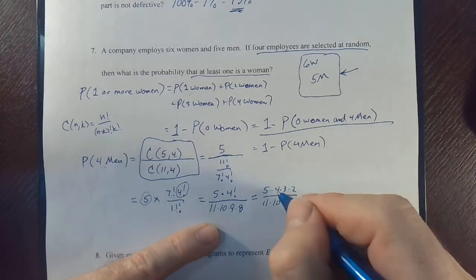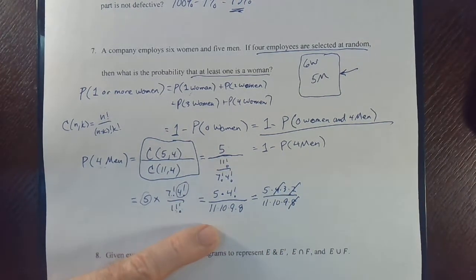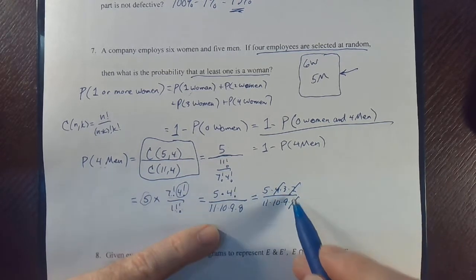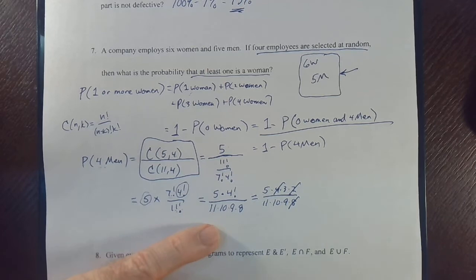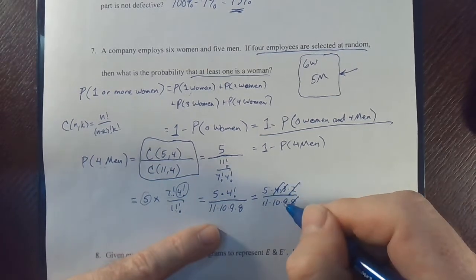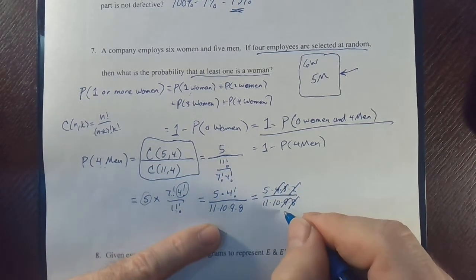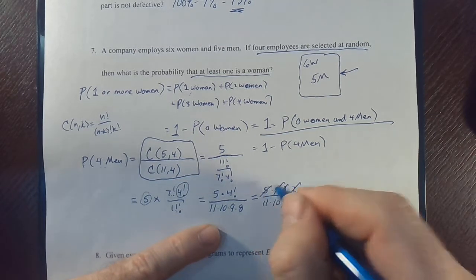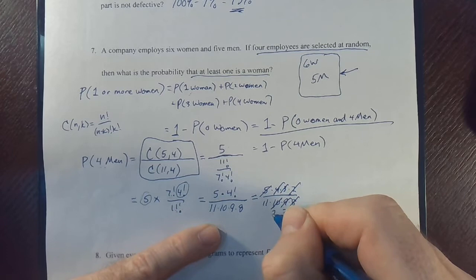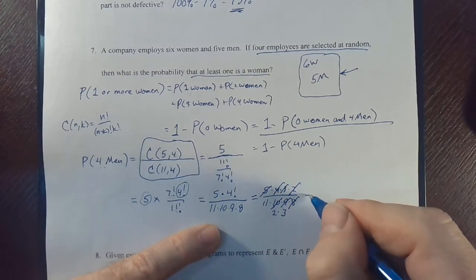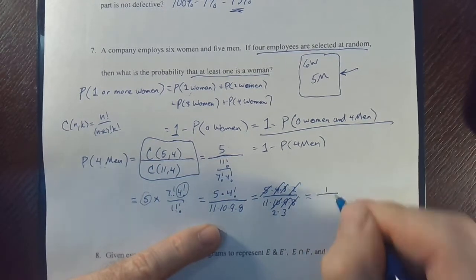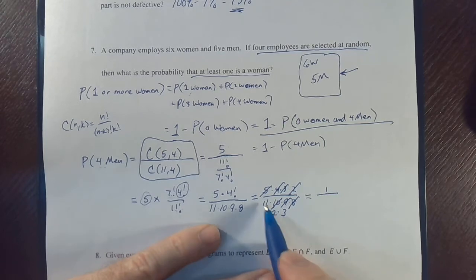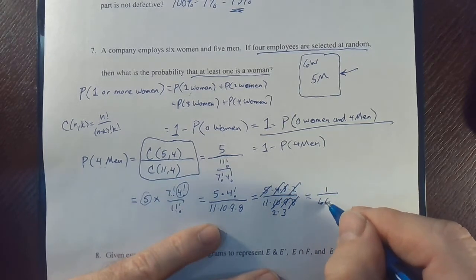I'm going to take 4 times 2 and cancel it with the 8 in the denominator. Then 3 over 9 leaves a 3 in the denominator, and 5 over 10 leaves a 2 in the denominator. So we get 1 on top and 11 times 2 times 3 on the bottom, which is 11 times 6, which is 66.